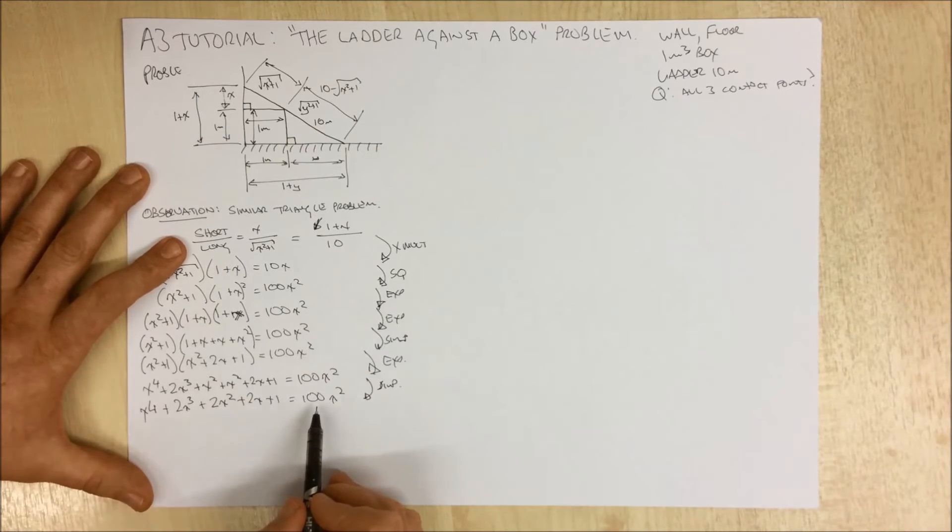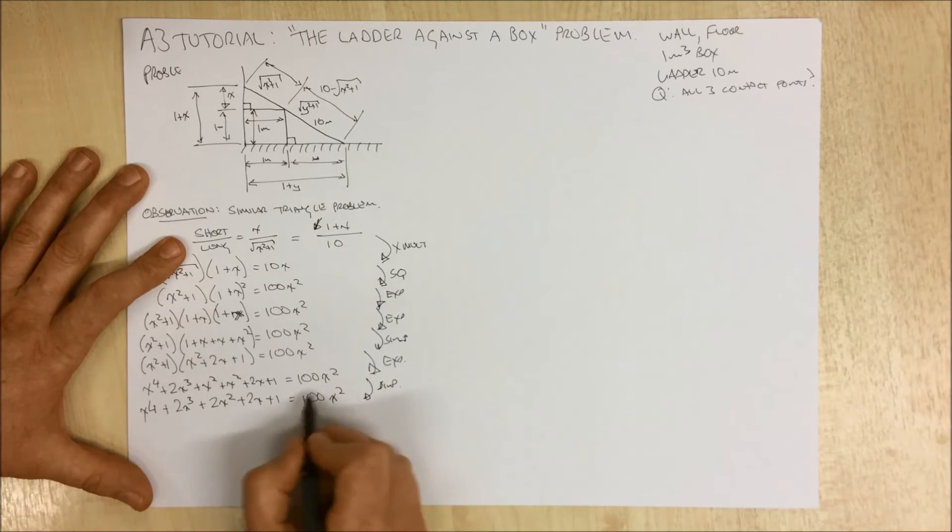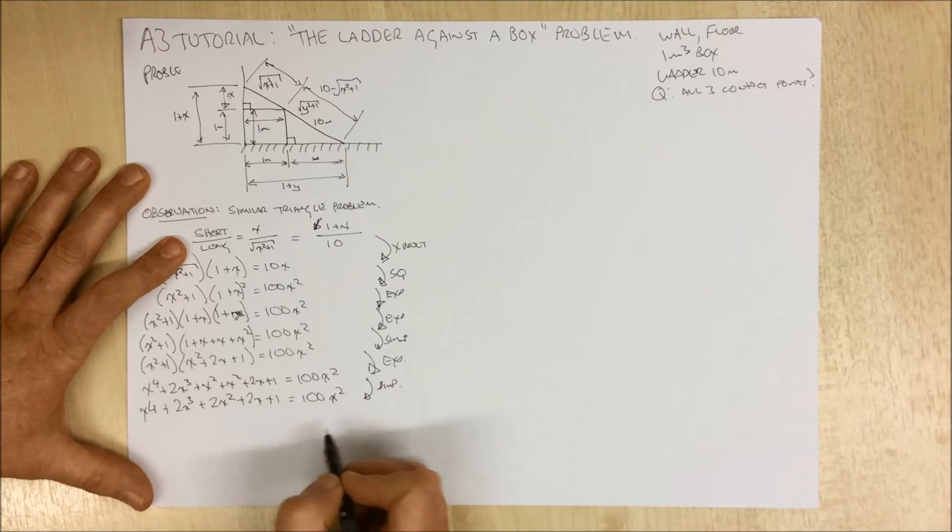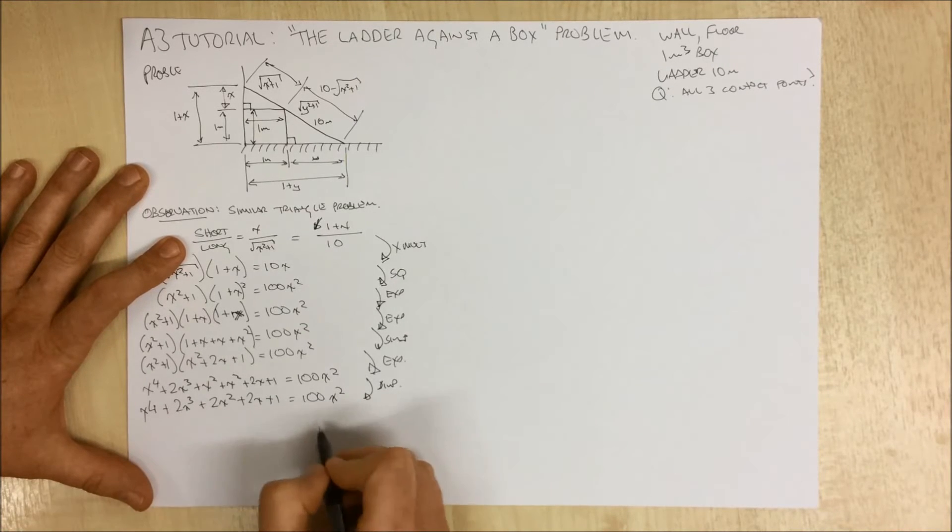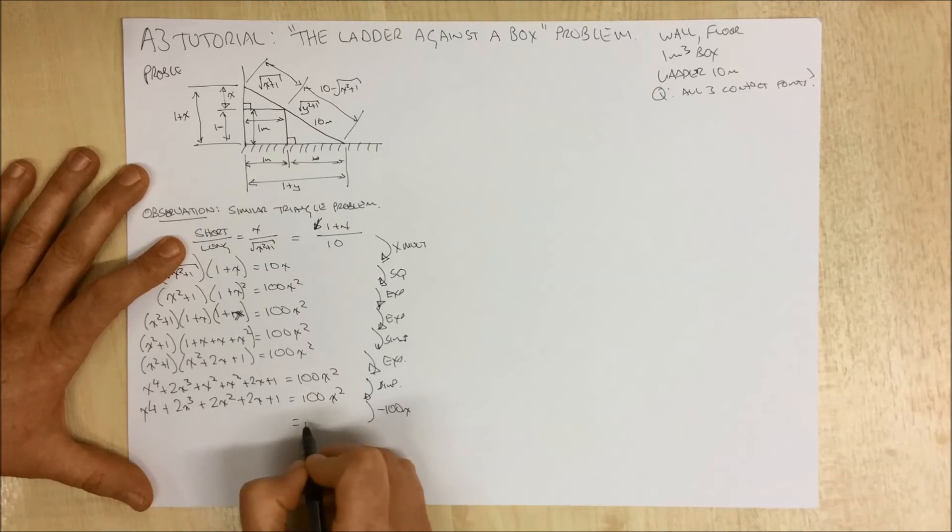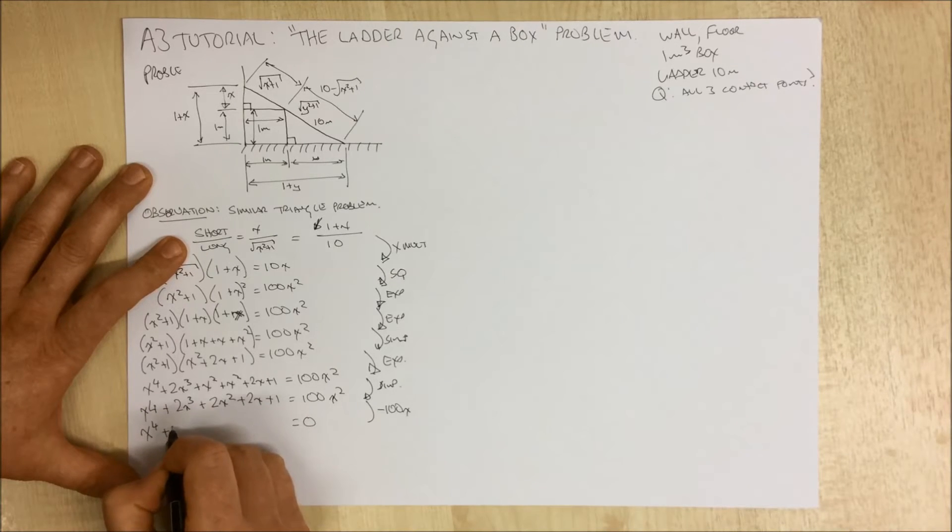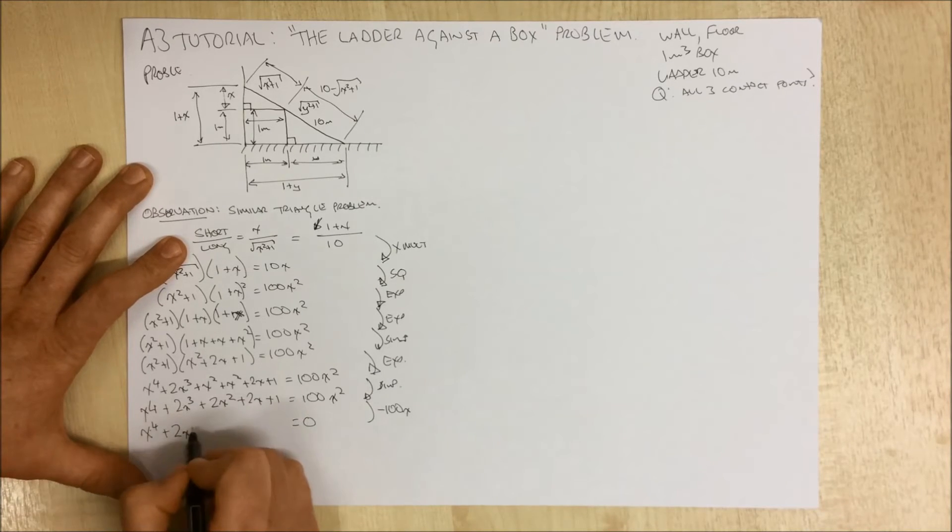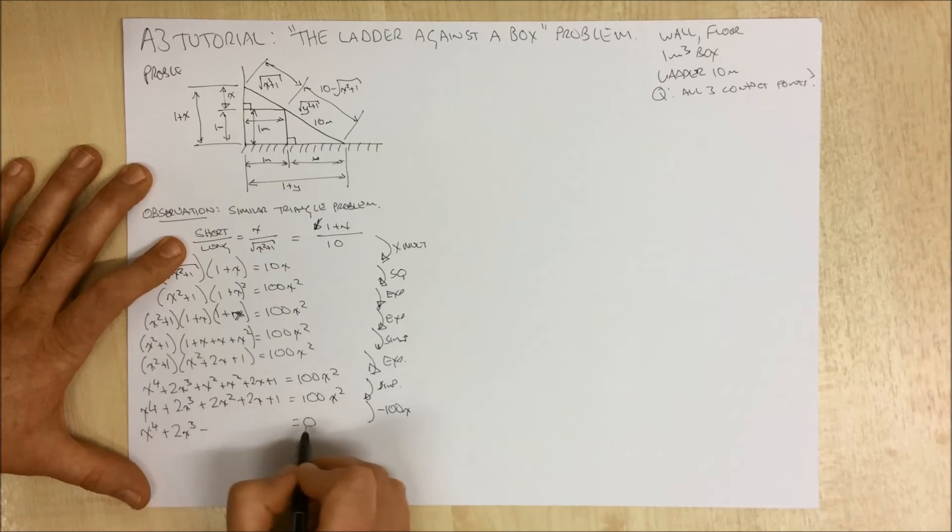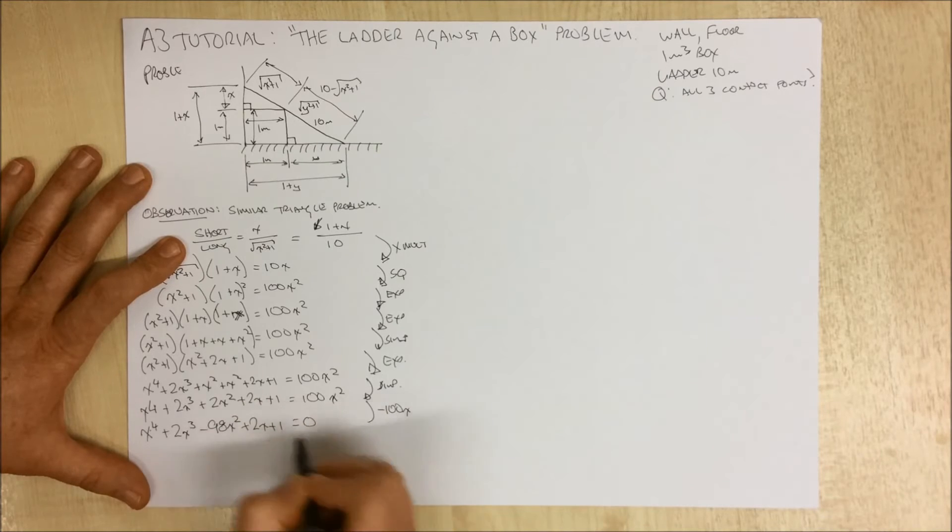So this gives us x to the 4 plus 2x cubed plus 2x squared plus 2x plus 1 equals 100x squared. What we can now do is make it all equal to 0. So we can subtract, the next step here minus 100x squared.